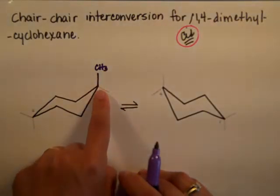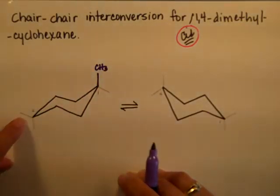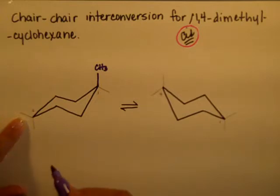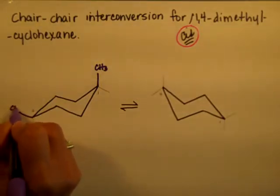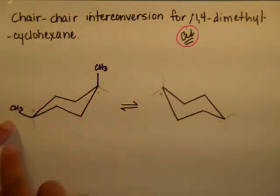If this methyl is up, I have to put the second methyl on the up position on carbon number 4. So make sure you come and pick the up position because you have to put them cis to each other.